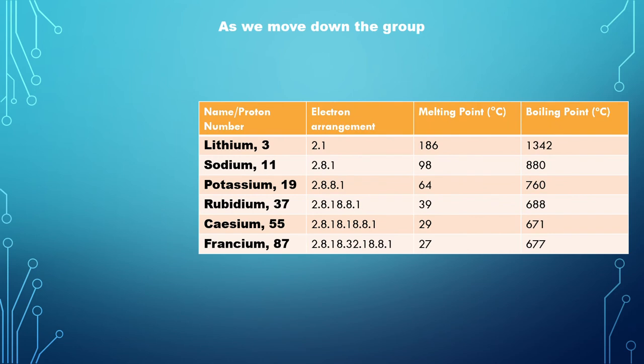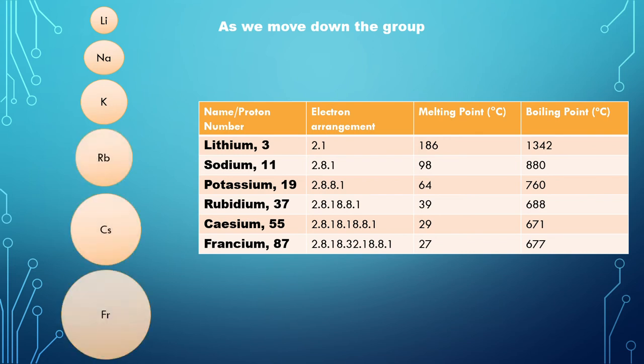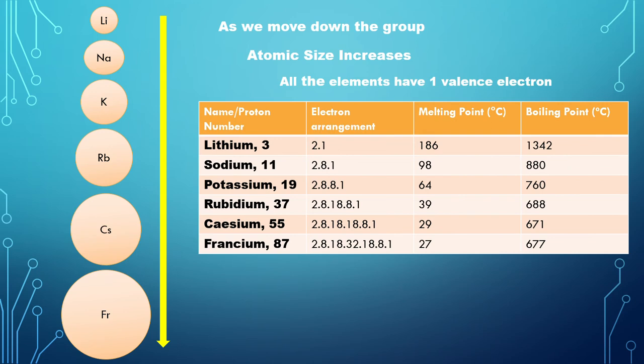Moving on, let's see the differences in physical properties of the elements as we move down the group 1 elements. The first point to be noted is that the atomic size increases because the relative atomic mass increases.